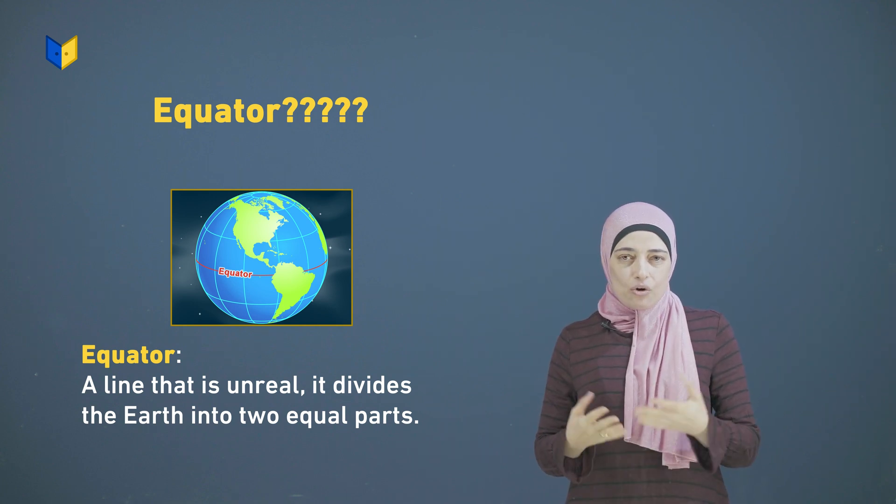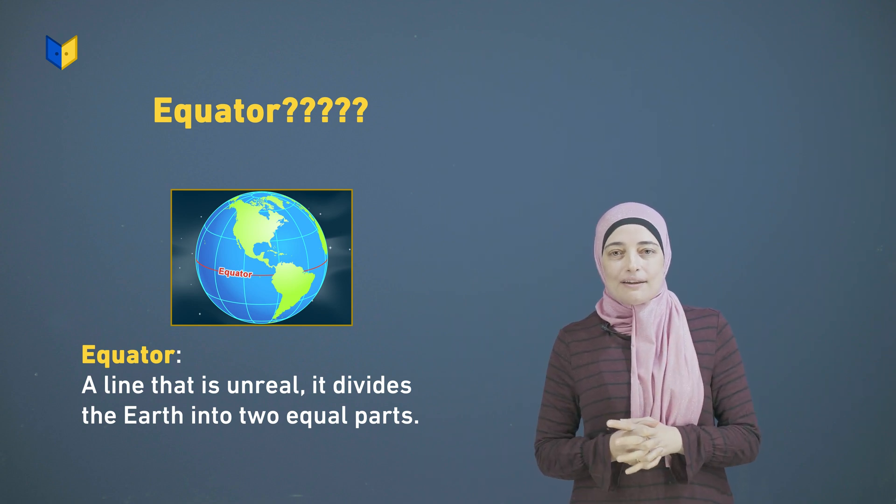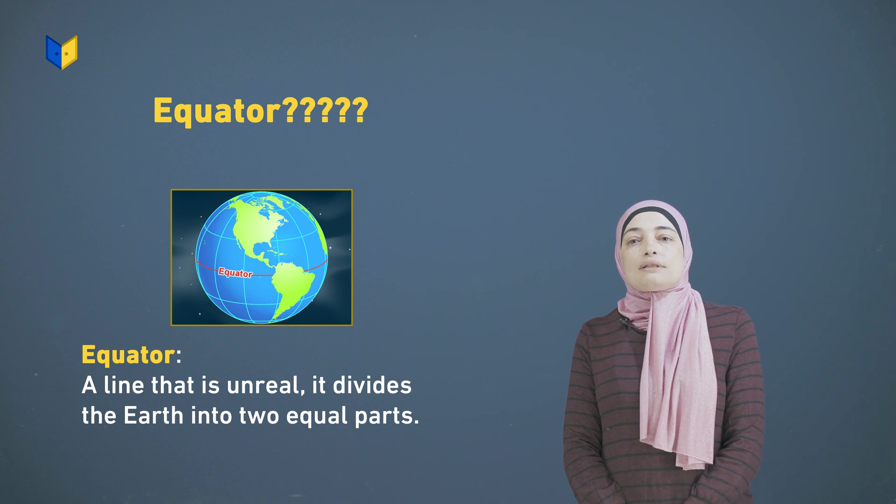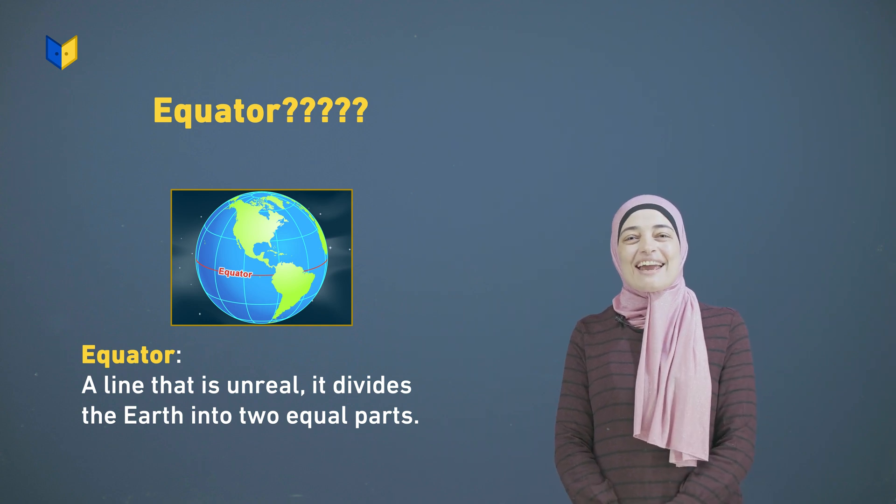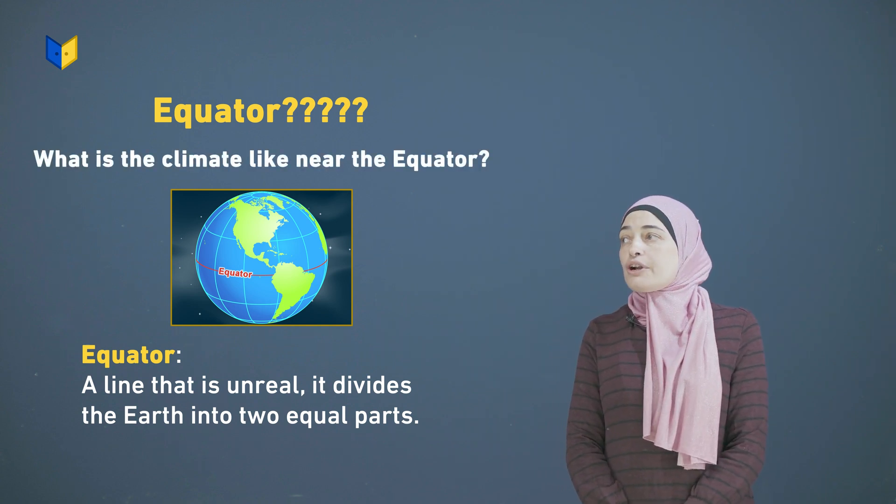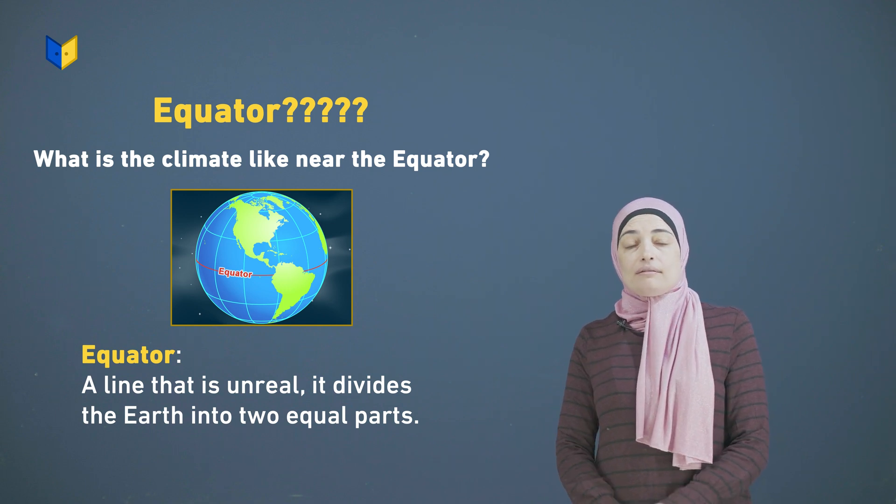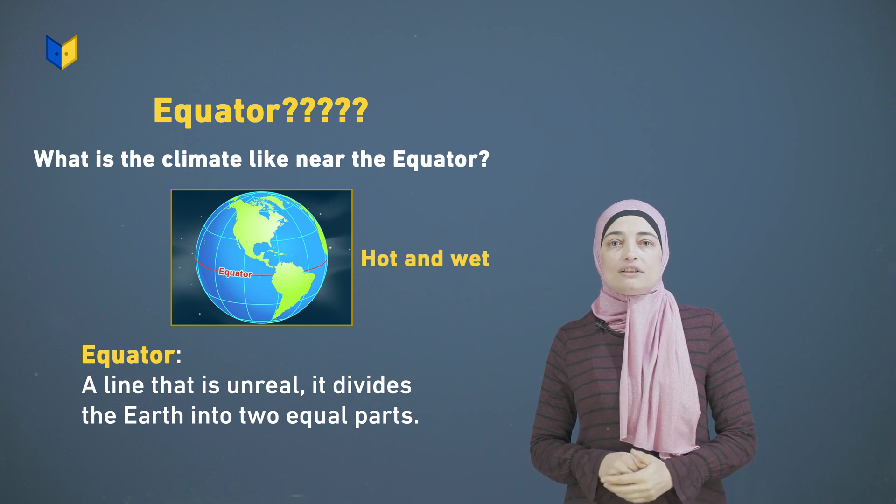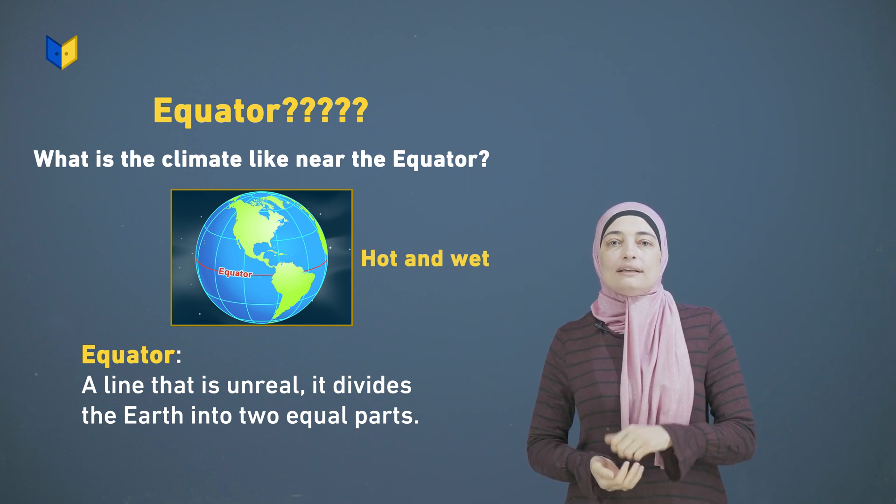So it divides the Earth into two equal parts. My question: what is the climate like near the equator? It is hot and humid.